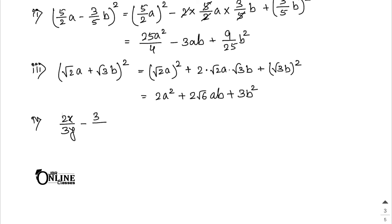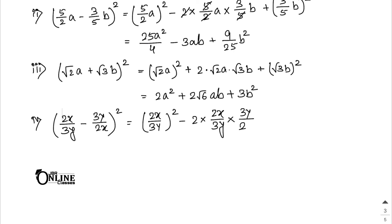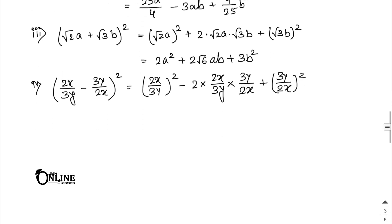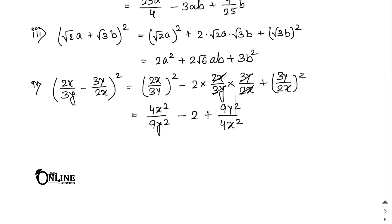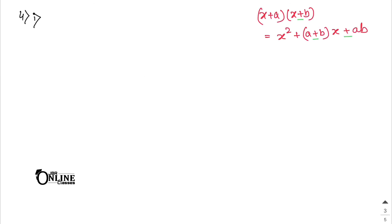Sum 4: (2x/3y - 3y/2x)². Apply (a - b)² = a² - 2ab + b²: (2x/3y)² - 2×(2x/3y)×(3y/2x) + (3y/2x)² = 4x²/9y² - 2 + 9y²/4x².